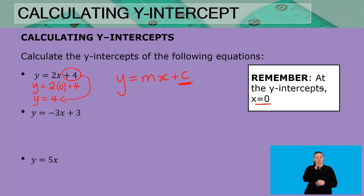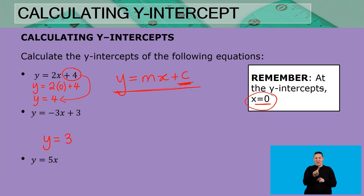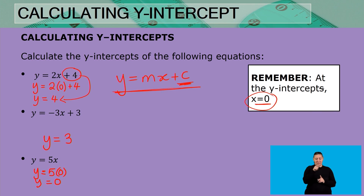The next equation is y = negative 3x + 3. We can already tell the y-intercept — either calculate it by setting x equal to zero, or use the standard form to see the y value is positive three. For the third example, x is zero, so y equals five multiplied by zero, which gives us zero. That graph passes the y-axis at y equals zero.